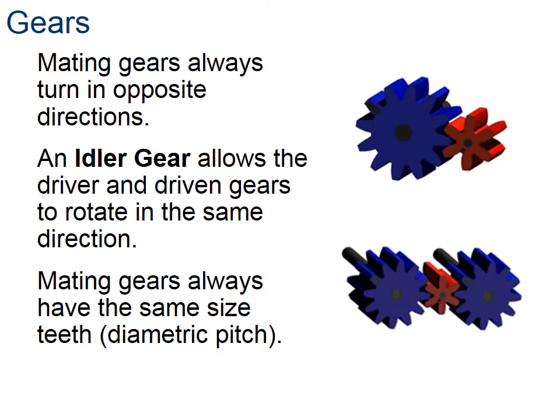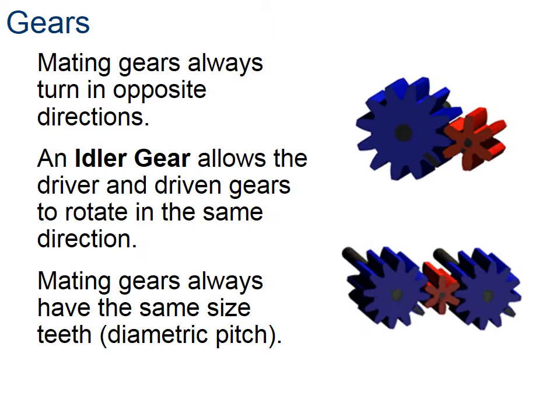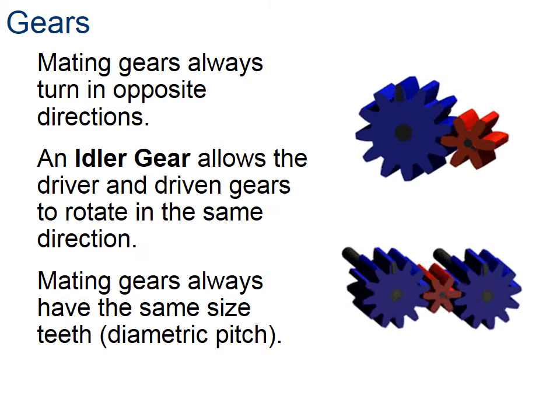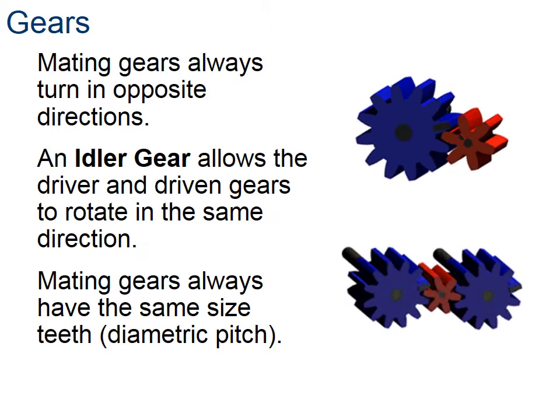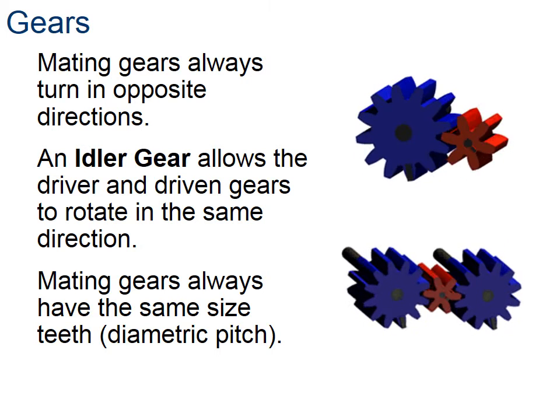So a couple of key points on this slide. Here you see two gears on top and three gears on the bottom, blue and red. When mating gears turn, they always turn in opposite directions when you're talking about specific pairs.